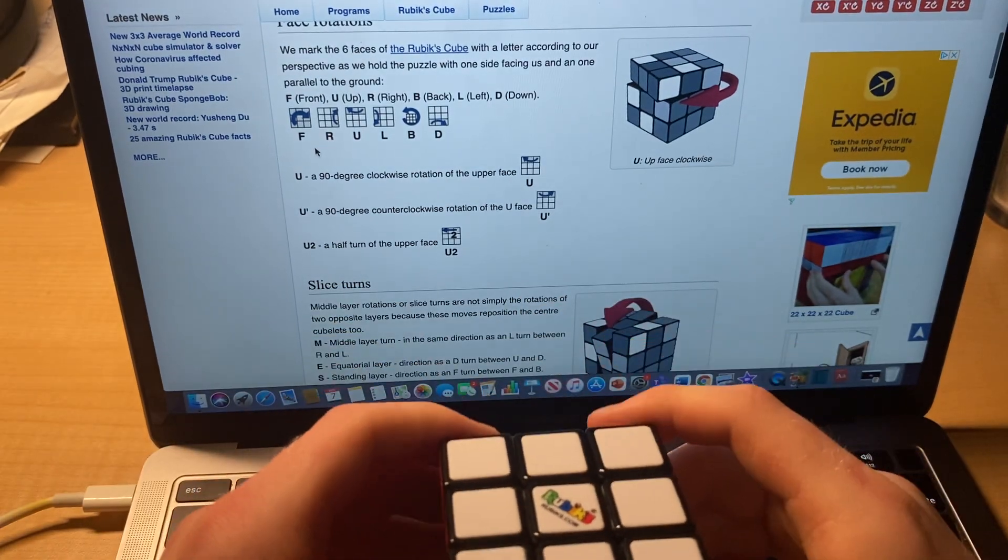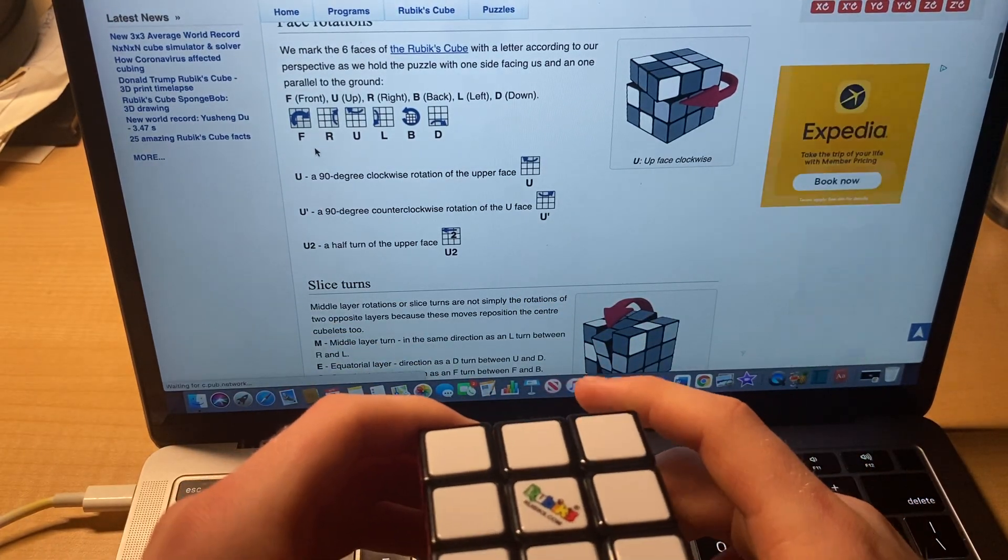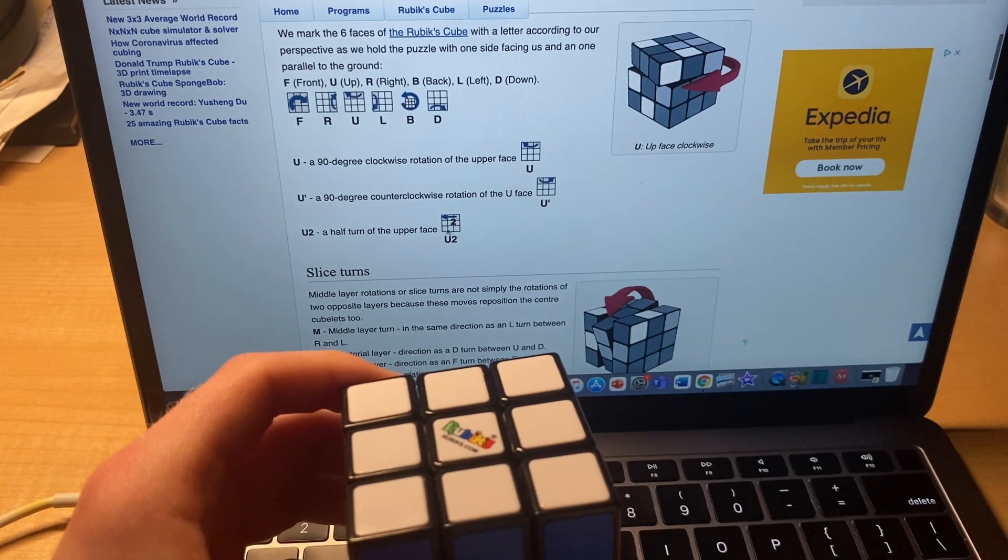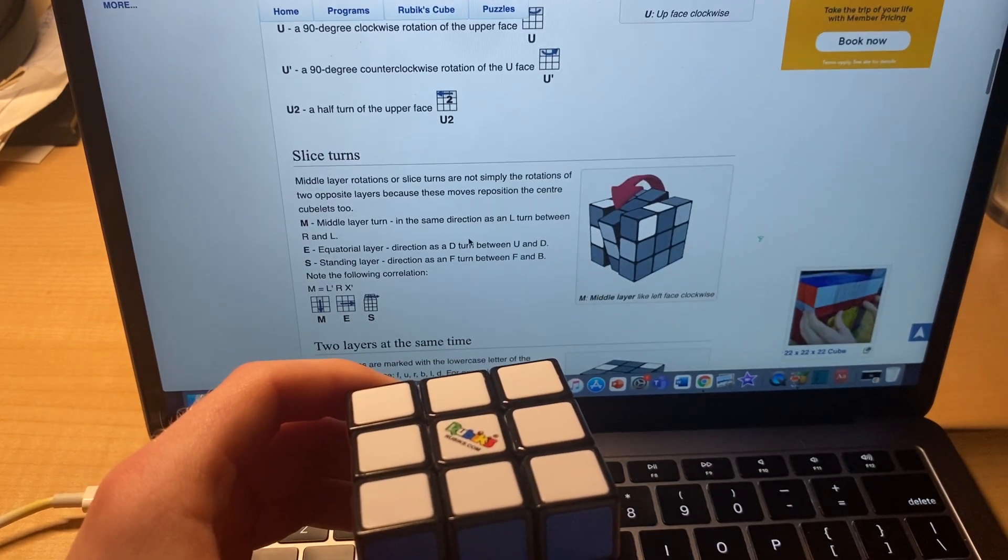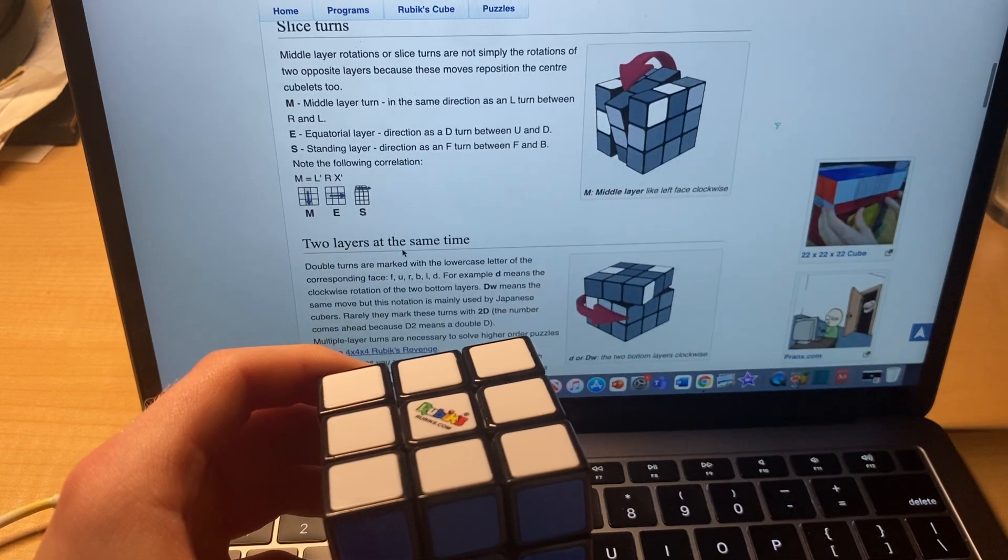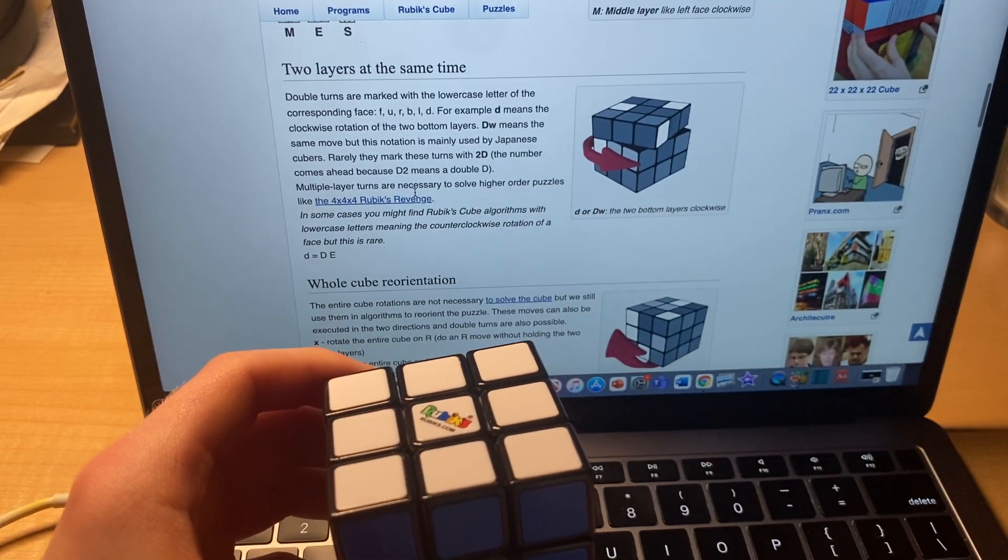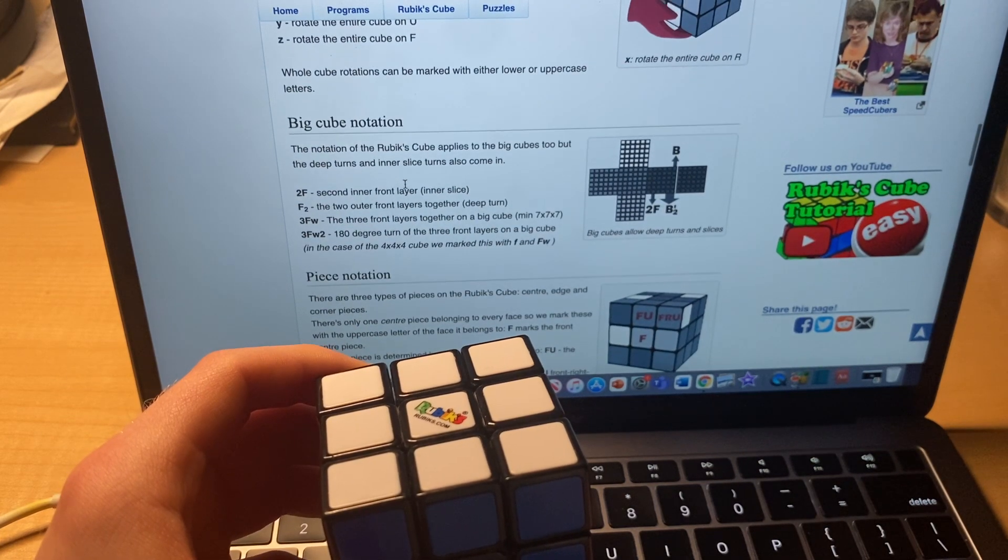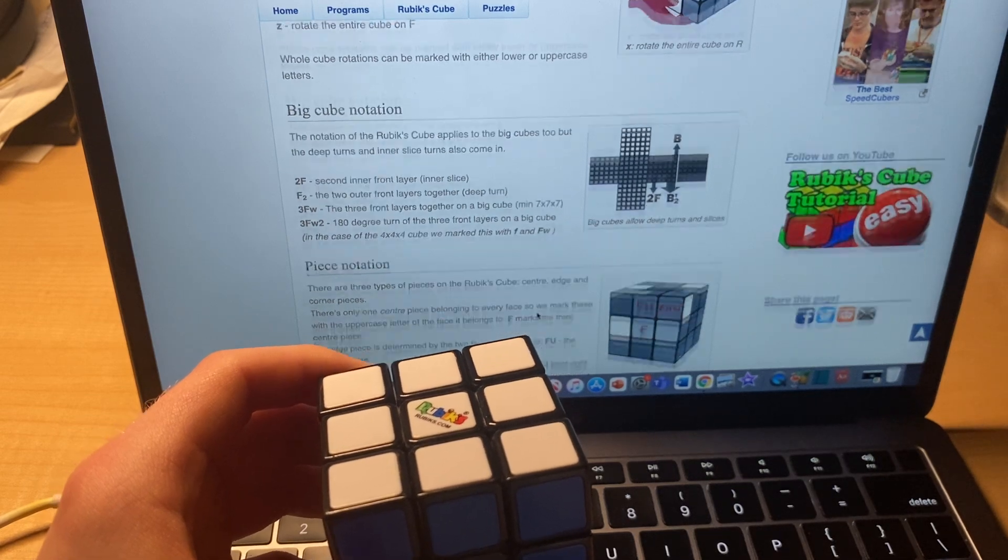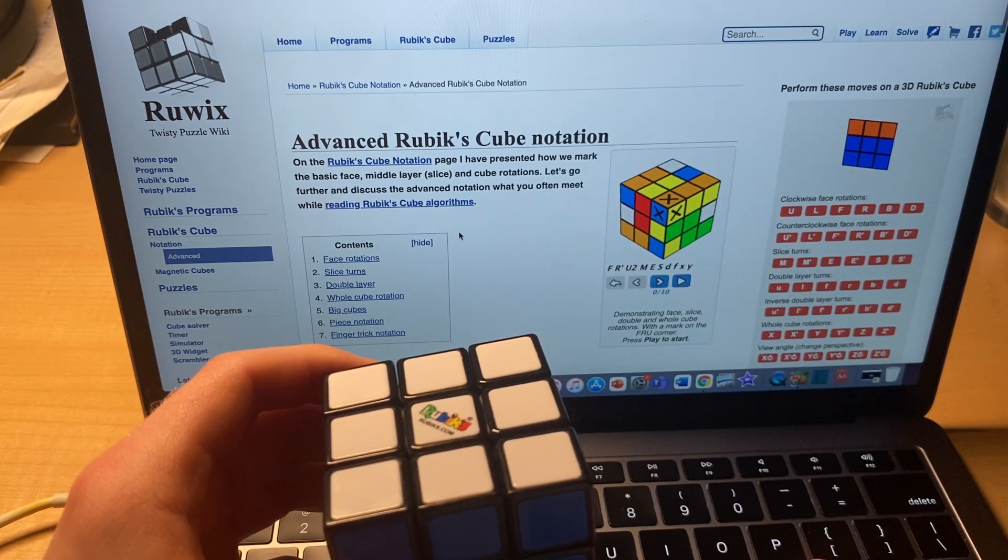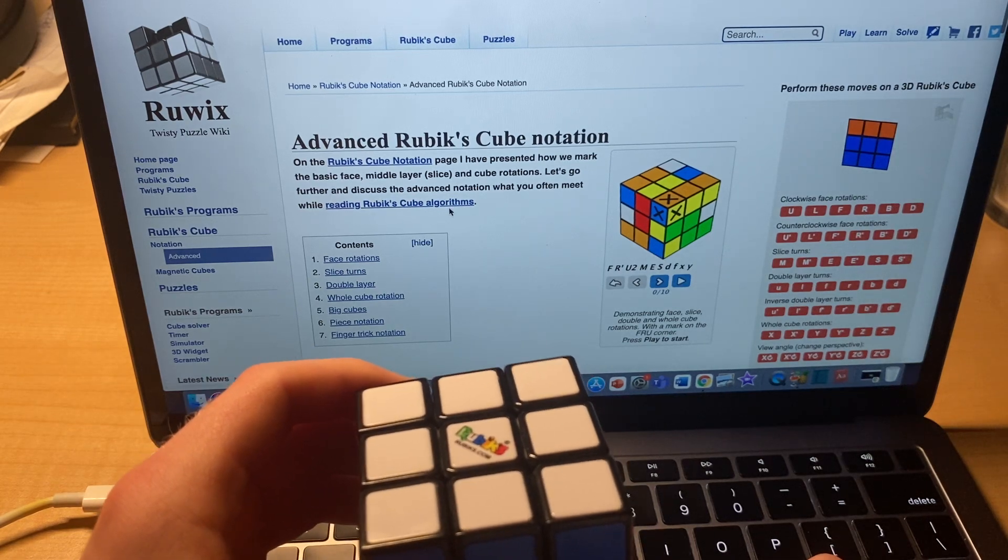Once you get better at it, you will know how to do finger flicks and all that stuff. But this is where you start off: learning the colors, learning the notation. And then there's more complicated ones like M, E, and S. I'll get into those a little later. I never use E and S really, I use M and M prime. Two layers at the same time—that's when you get a little bit more into it. I don't even do this. Yeah, so see, that's what I use. I will link this in the description if you want to take a look at this one, and I will find other ones and link those too.